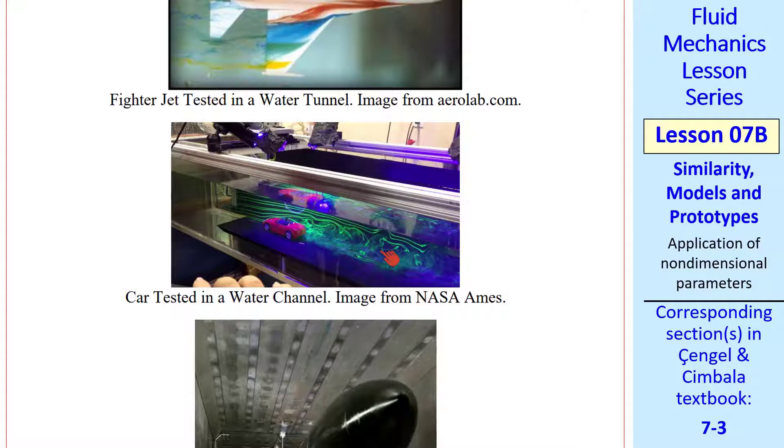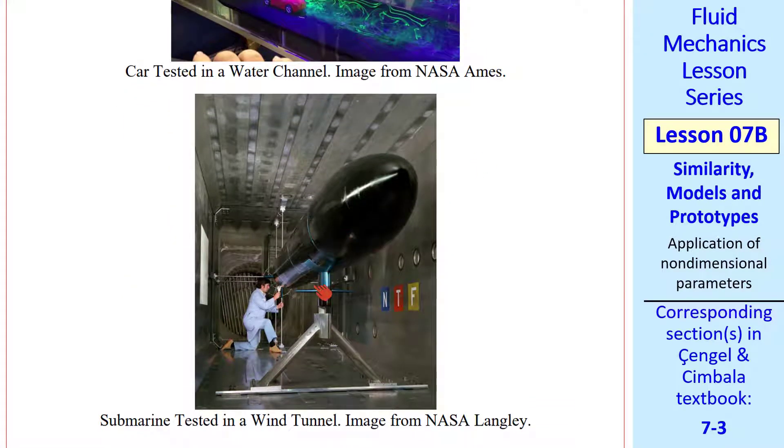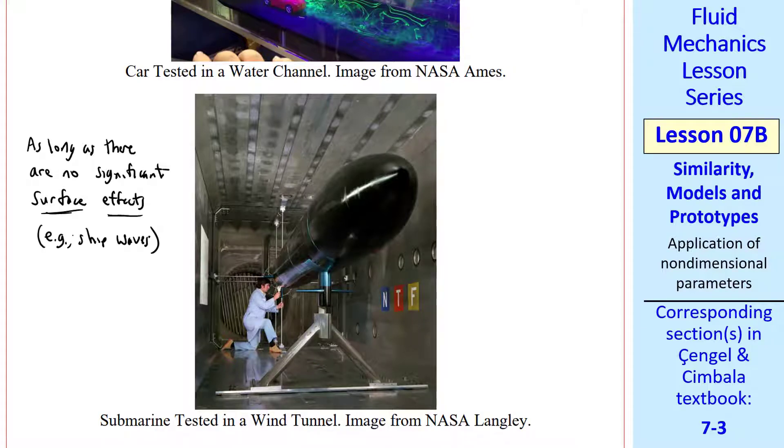And here's the opposite case, a submarine model being tested in a wind tunnel. As long as there are no significant surface effects, for example, ship waves on the surface of the ocean, you can use any fluid you want for the model test. Since we're modeling this submarine down deep in the ocean, there are no surface effects to worry about. As long as we achieve dynamic similarity, typically with the Reynolds number, sometimes with other non-dimensional parameters, we can measure forces and moments and other things on this model and scale up to the prototype using air, helium, or whatever other fluid you care to use.